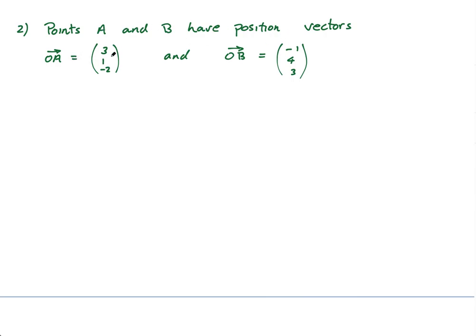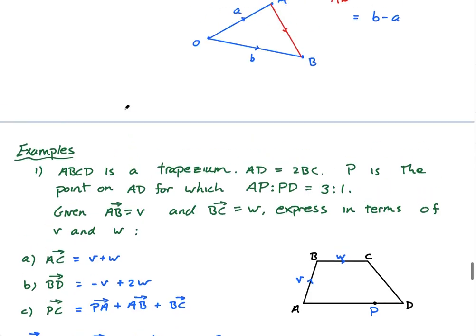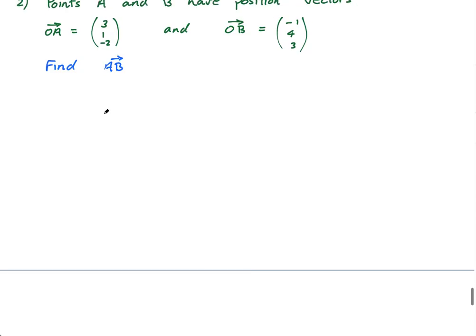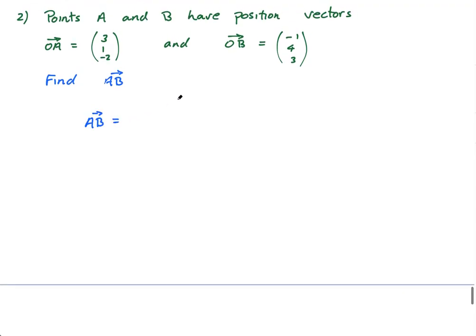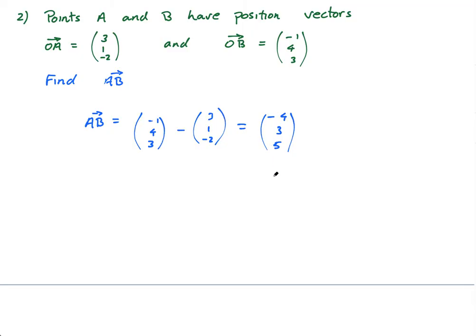Last question: points A and B have position vectors — oh, a equals this vector and b equals this vector. Find vector AB. This is that rule: AB equals b minus a when these are position vectors. So AB equals little b minus little a. It's this minus this: 1 minus 3 is negative 4 for the first component, 4 minus 1 is 3, and 3 minus negative 2 is 5. So AB is negative 4, 3, 5. The common mistake is to do it backwards — it's always the second minus the first.